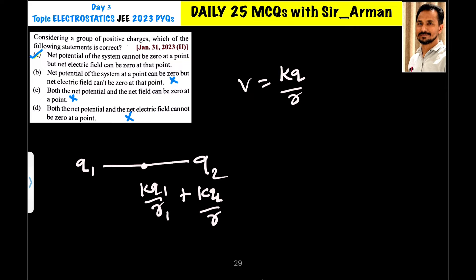So, as there is no zero potential, so the first statement is correct. There will be a zero potential, but it is at infinity, which is not given here. So, the first point is correct because the net potential of the system cannot be 0.